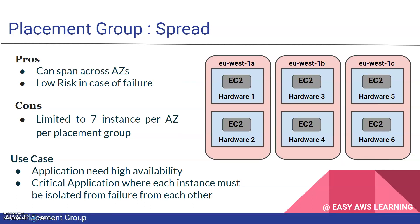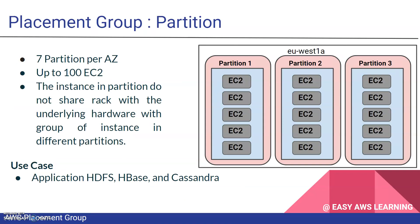For partition, as discussed, it creates logical groupings and creates partitions in a single availability zone. Each partition has a different set of racks, and each rack does not share hardware with another partition. You can deploy up to seven partitions per availability zone. Use cases include applications requiring HDFS (Hadoop Distributed File System), HBase, and Cassandra — applications that specifically need this kind of distributed file system setup.